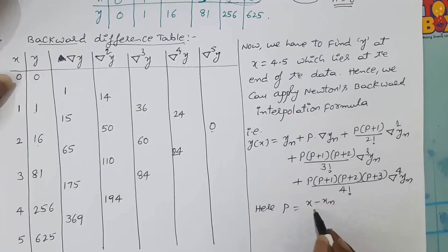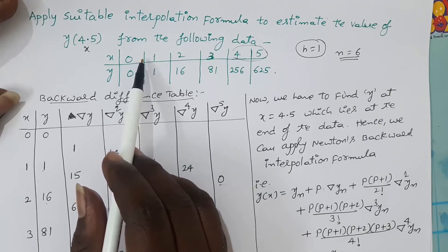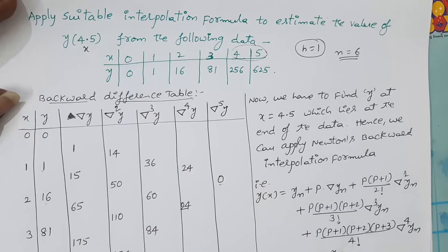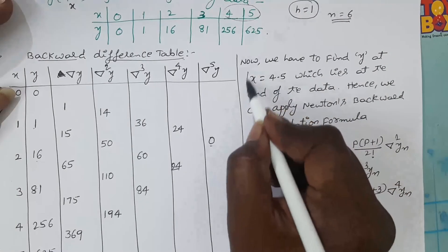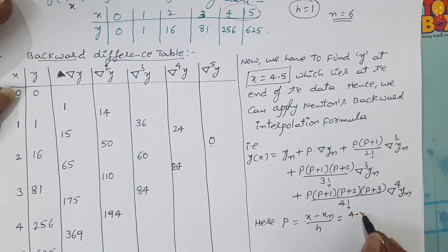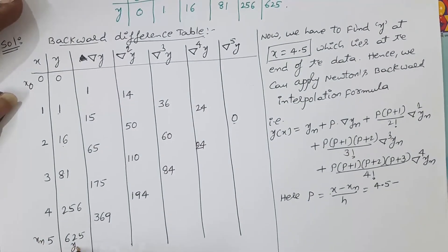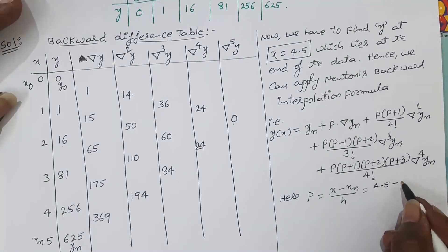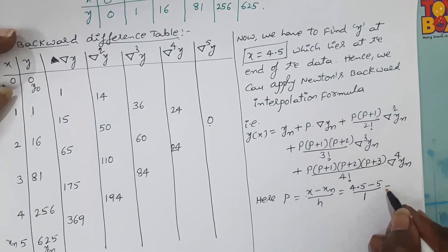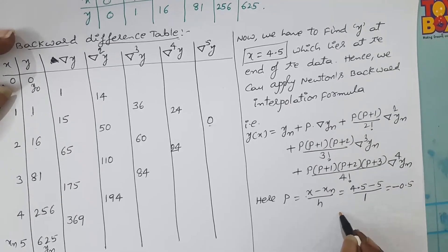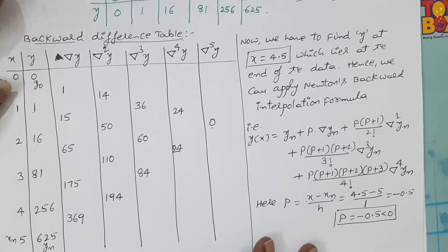Here p = (x − xn)/h. Note: for Newton's forward formula, p = (x − x₀)/h; for backward formula, p = (x − xn)/h. The interpolating point x = 4.5, xn = 5, h = 1. So p = (4.5 − 5)/1 = −0.5. In Newton's backward interpolation, p is always negative, whereas in Newton's forward formula p is always positive.